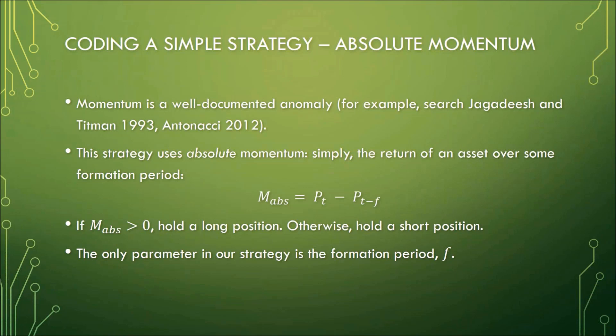The trading logic based on this strategy is: we go long if the absolute momentum is greater than zero, otherwise we hold a short position. There's only one parameter in this whole strategy, and that's the formation period F — how far back we look in the past to calculate momentum.